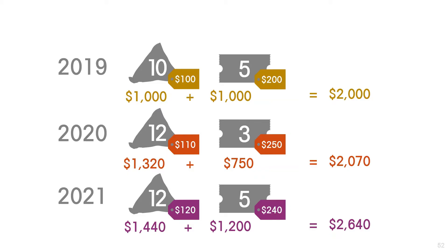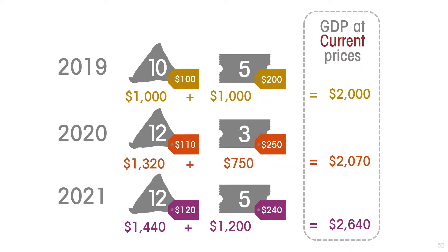This kind of calculation is called GDP at current prices — what economists would call nominal GDP. But nominal GDP cannot distinguish between changes in the volume of production and changes in the value of production, because both the volumes and the prices change from year to year. We don't know whether it is the volume or the prices accounting for the increase we see from $2,000 to $2,070, and from $2,070 to $2,640.